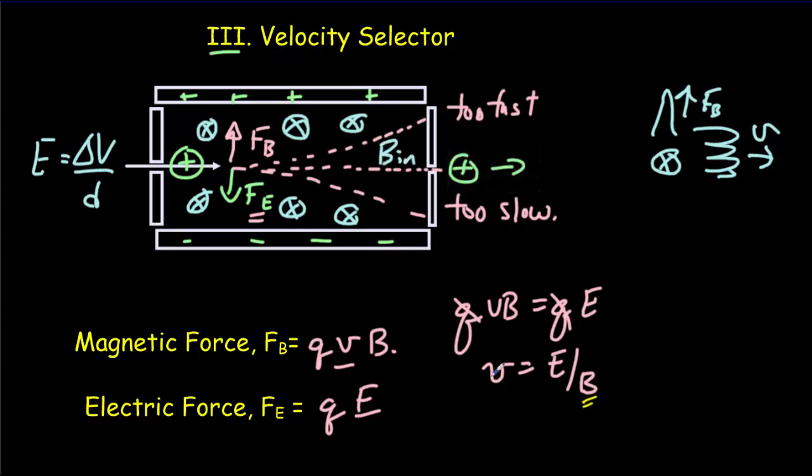Now let's look at what happens to those positive ions as they enter the fourth region of the mass spectrometer. Here's our positive ion entering that fourth region where we want to separate the different isotopes. We want these positive ions to execute circular motion.